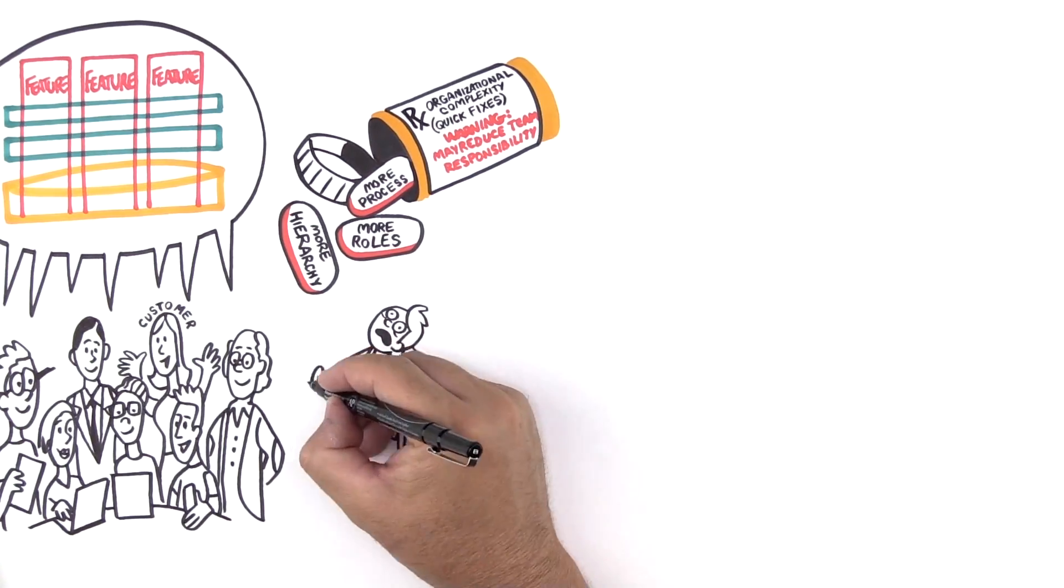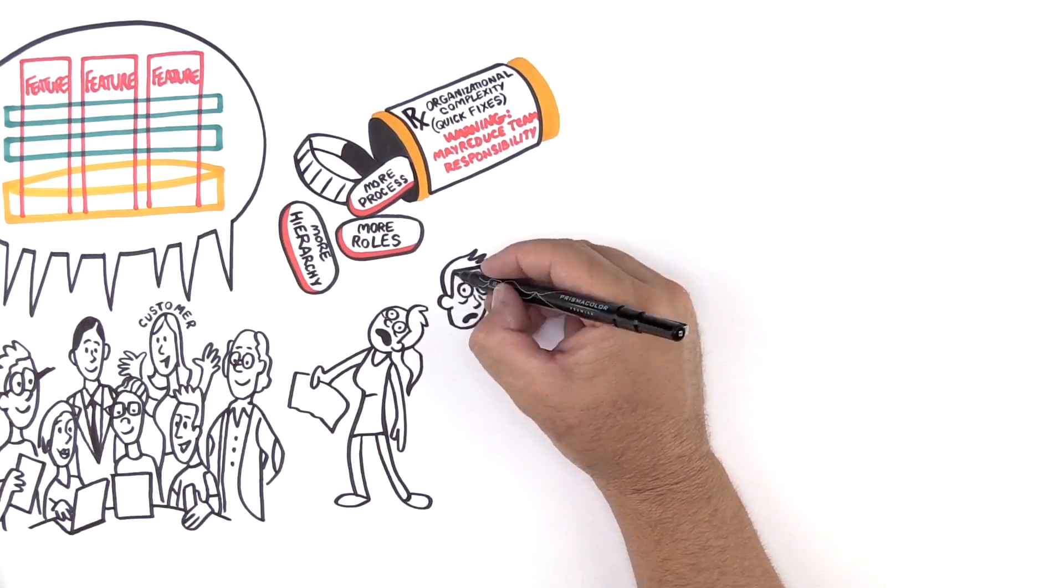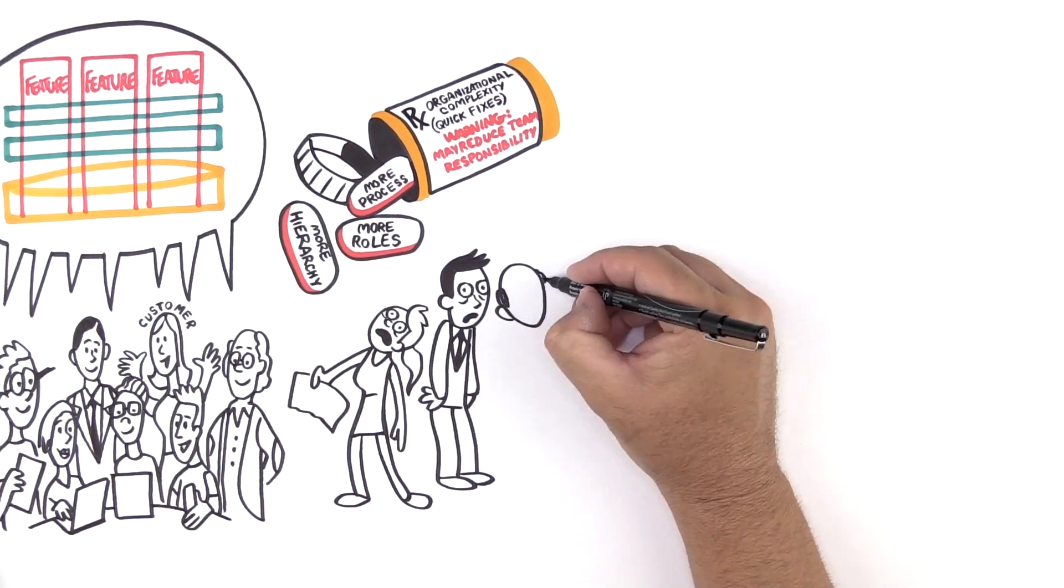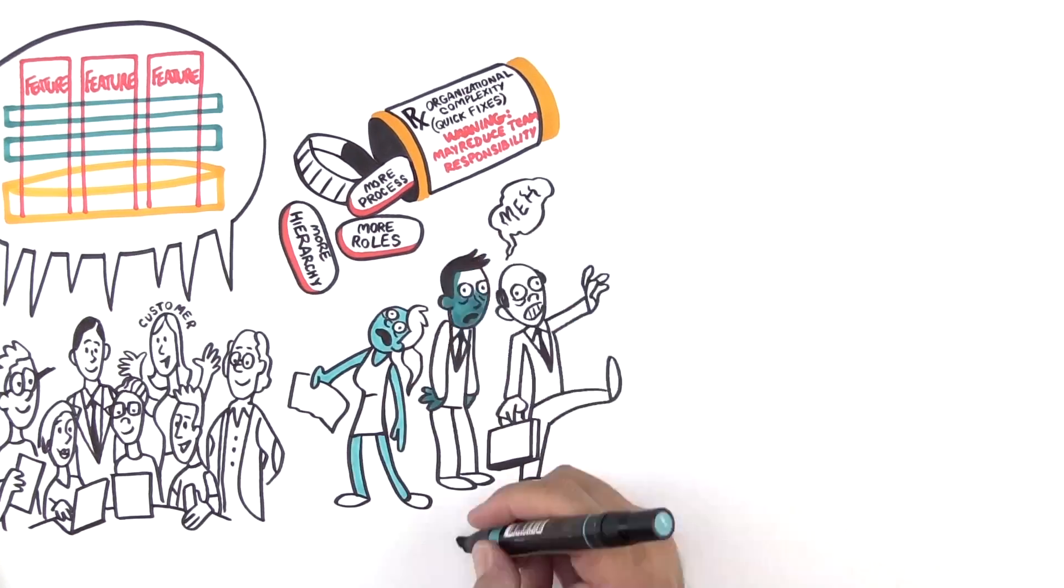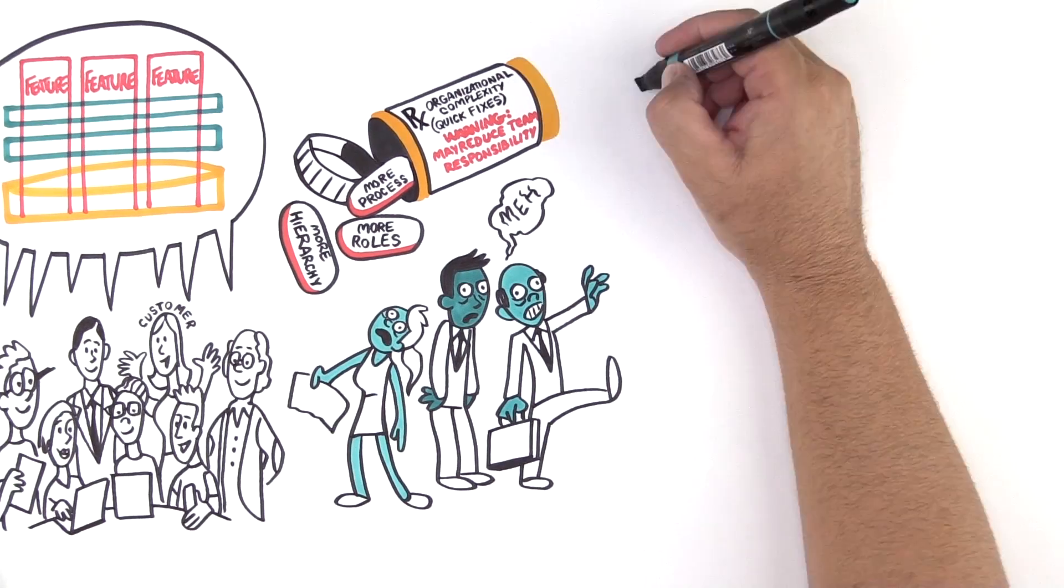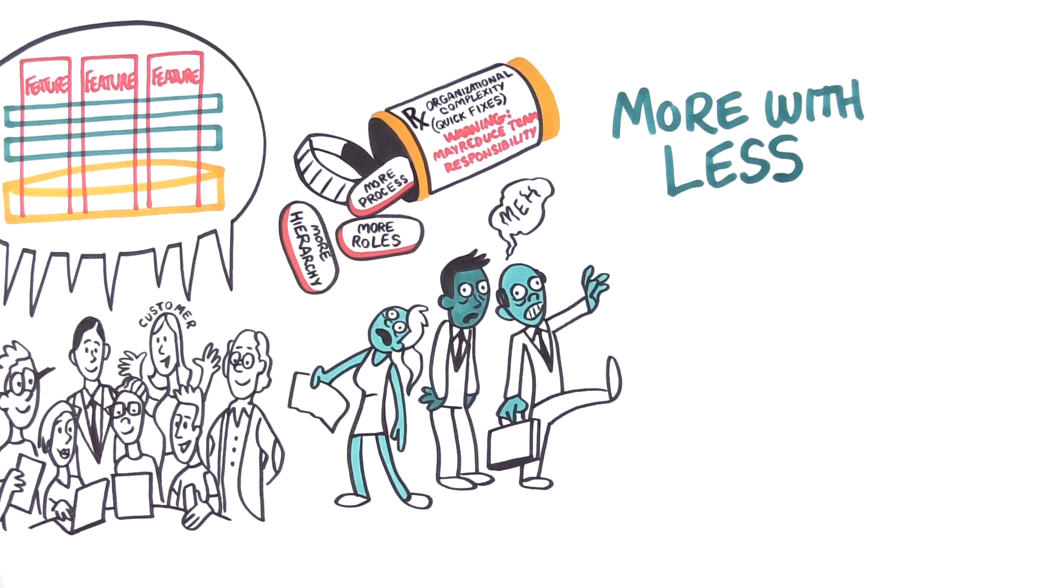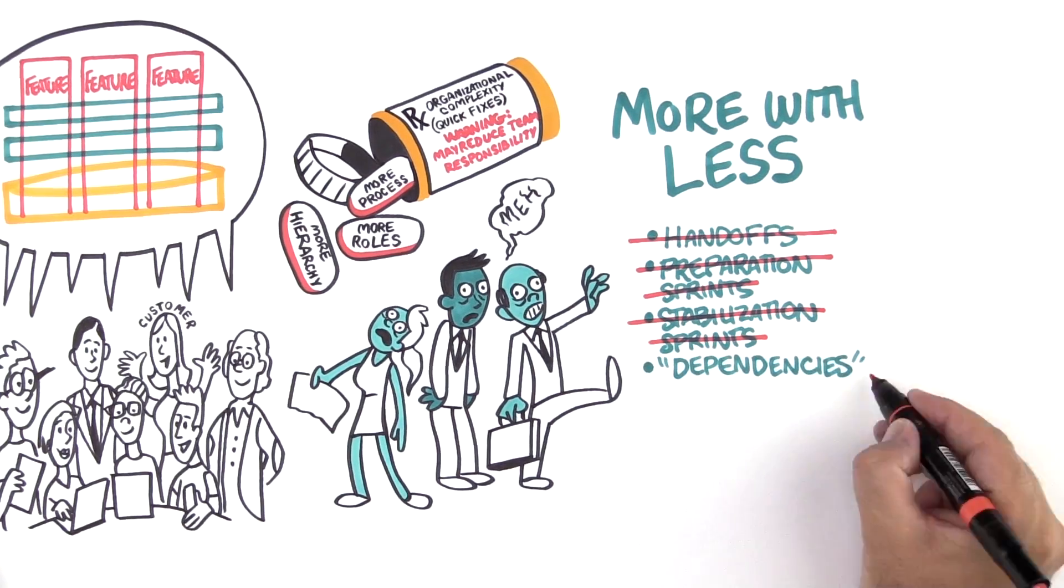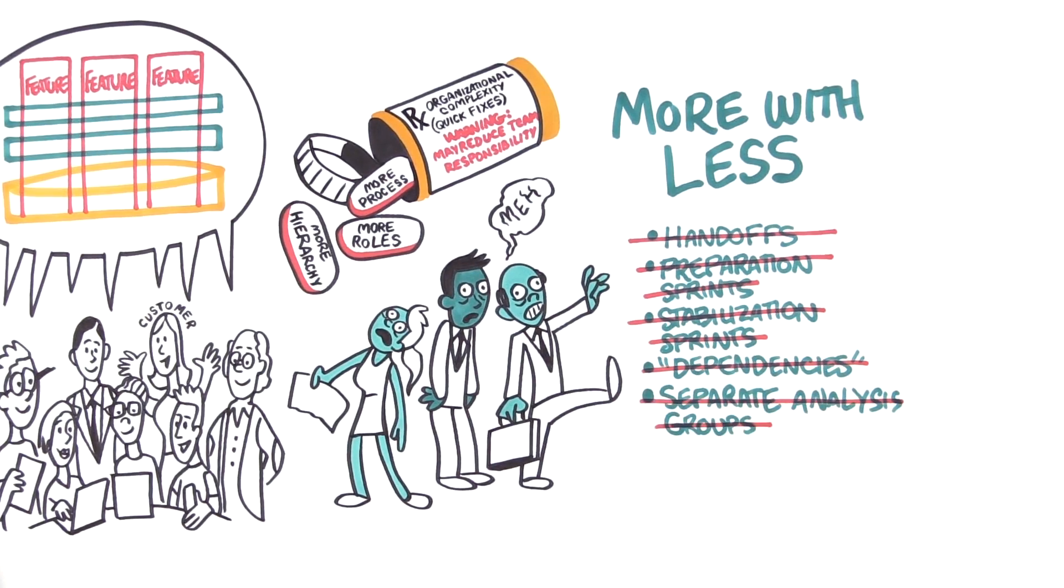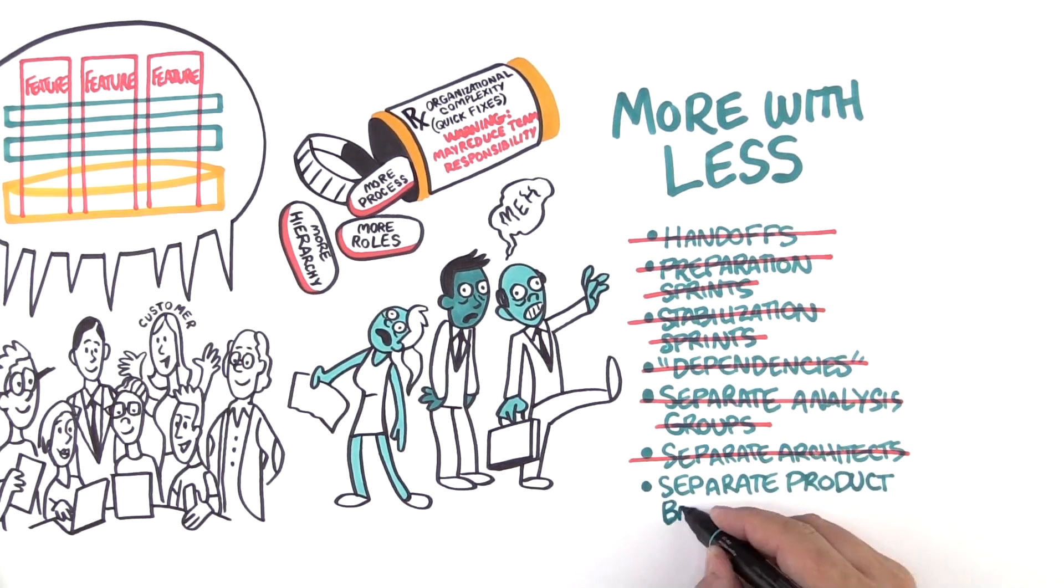Giving responsibilities to processes, specialized roles, or other departments takes responsibilities away from the team. Companies wind up with employees who are just mindless zombies. We believe in removing that complexity instead. More with less. More with less also discourages things like handoffs, preparation sprints, stabilization sprints, so-called dependencies, separate analysis groups, separate architects, and separate queues for each team.